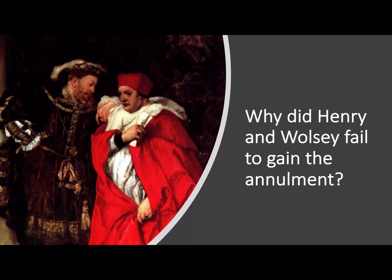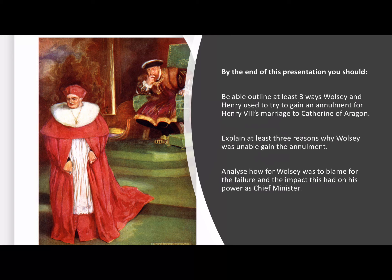Hello, this is Ciel Barber looking at Henry VIII. Today we're going to look at why did Henry and Wolsey fail to gain the annulment. By the end of this presentation you should be able to outline at least three ways that Wolsey and Henry used to try to gain an annulment for Henry's marriage to Catherine of Aragon, explain at least three reasons why Wolsey was unable to gain the annulment, and analyse how far Wolsey was to blame for the failure and the impact this had on his power as Chief Minister.